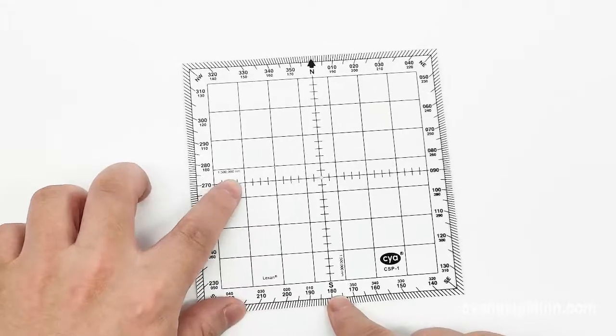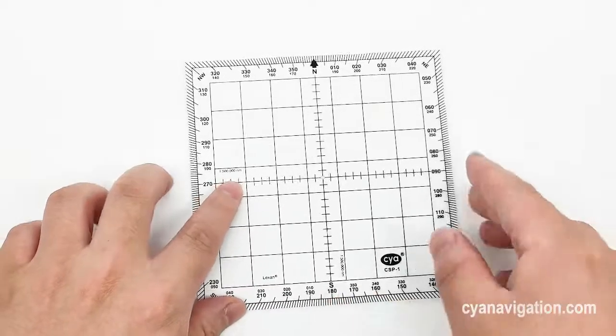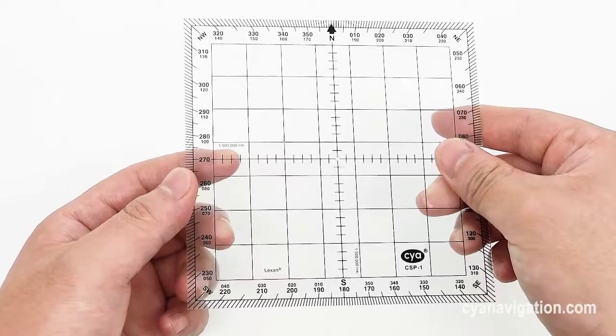And also the nautical mile scale, it reads 500,000.